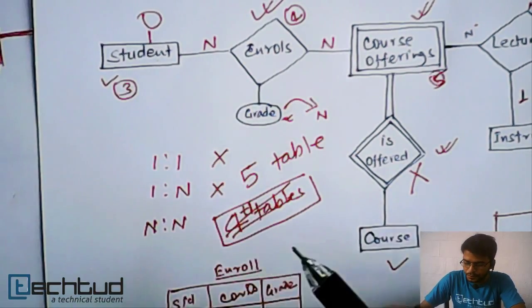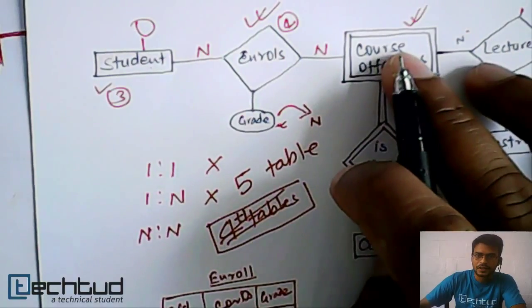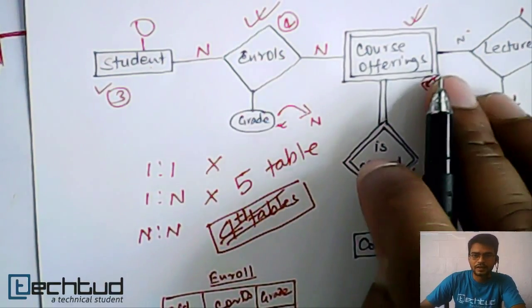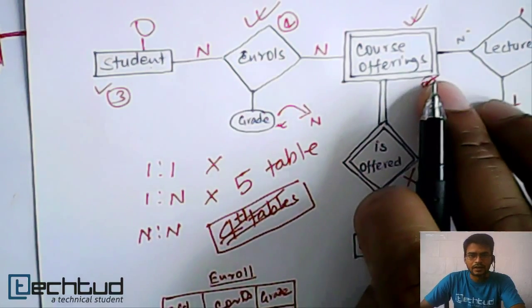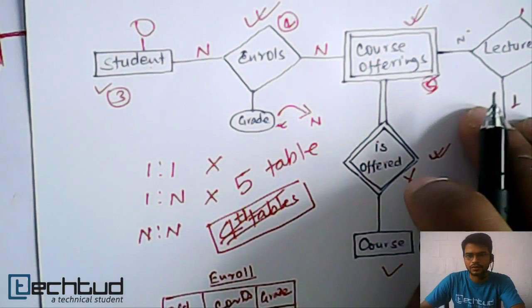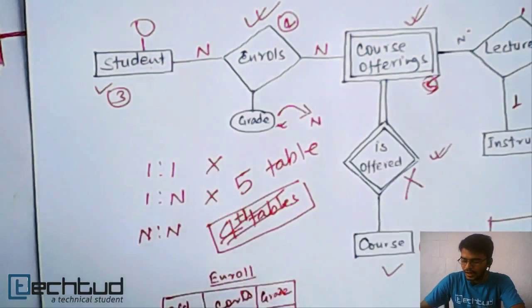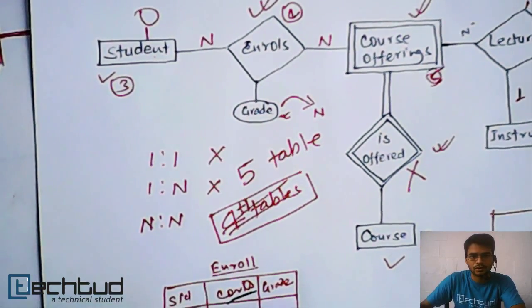Then there should be a question or doubt that if this entity is a weak entity, then it is clear that it is not having any key attribute, right? It doesn't have any key attribute. Then in this case, how can we store this course ID?